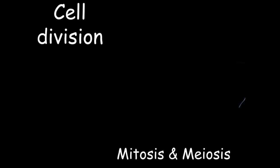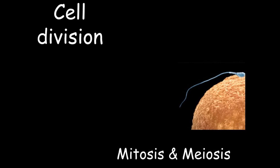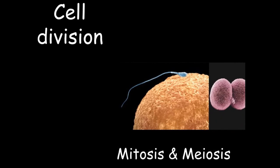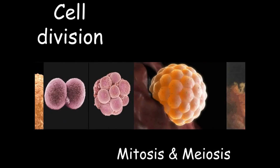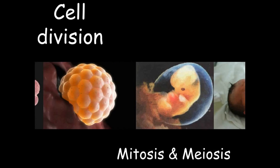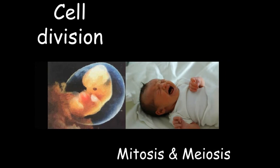Every animal, plant and fungus began life as a single cell. An adult human is made up of about a hundred billion cells which all contain an identical copy of the DNA that was found in that first original cell.